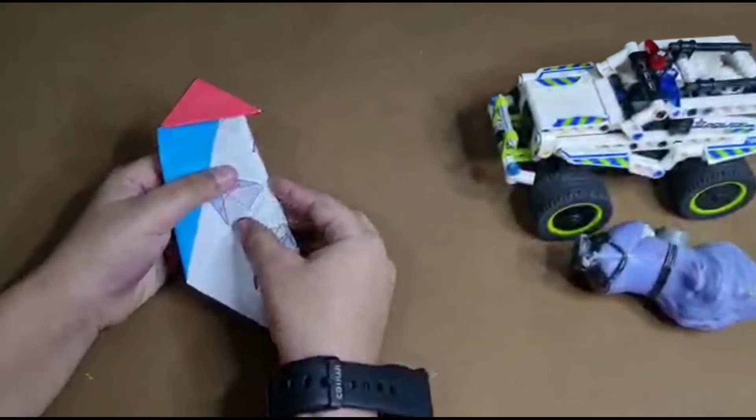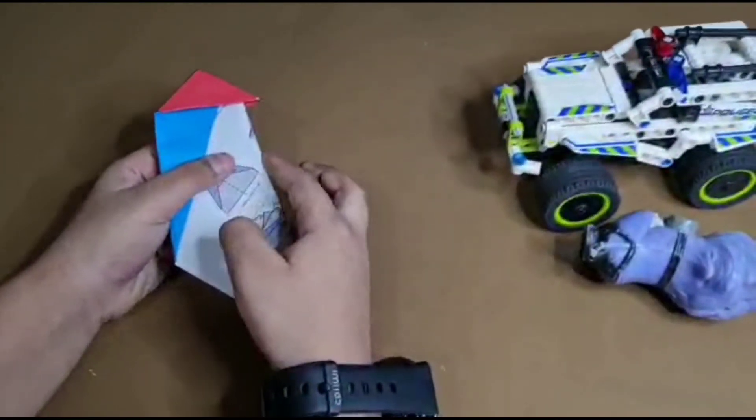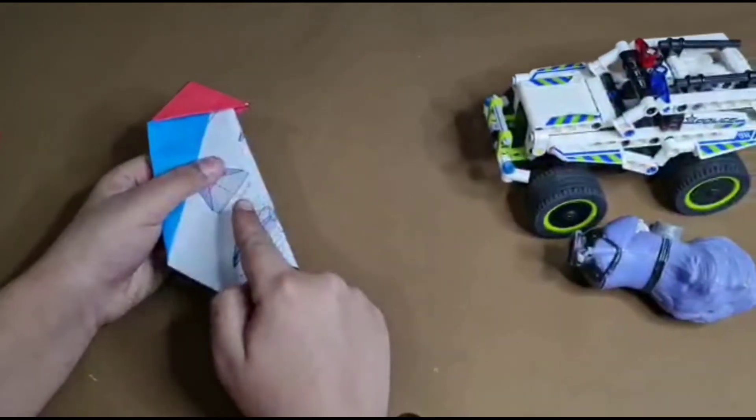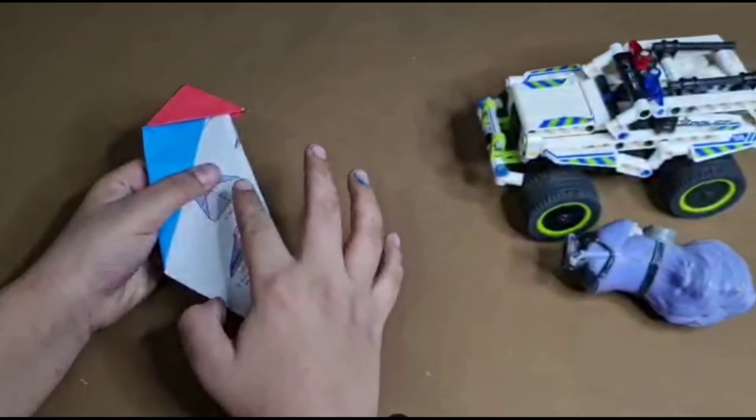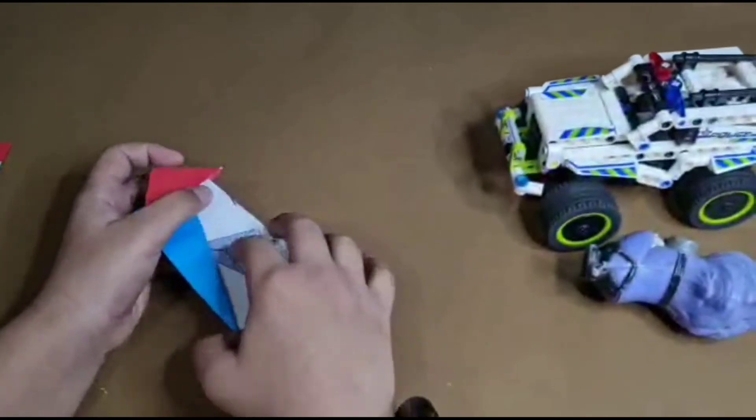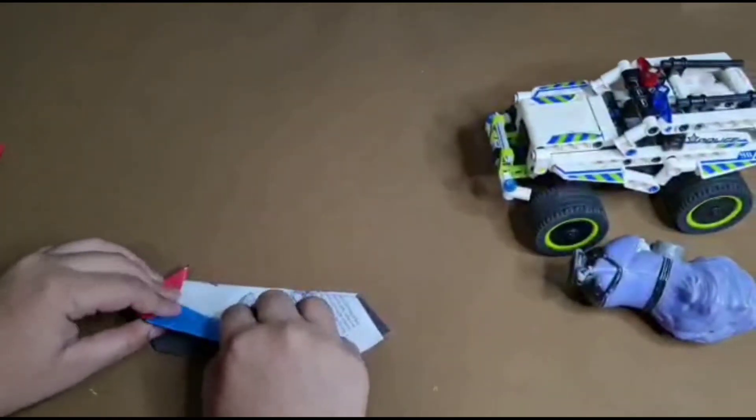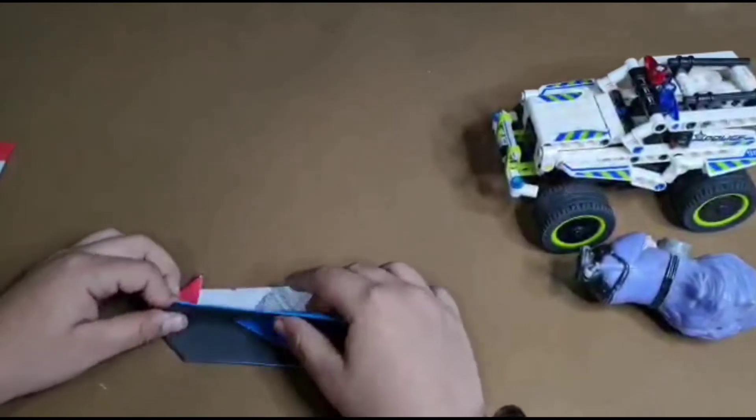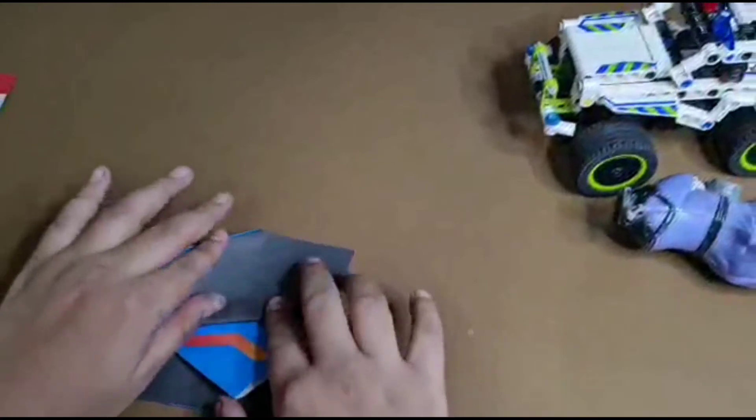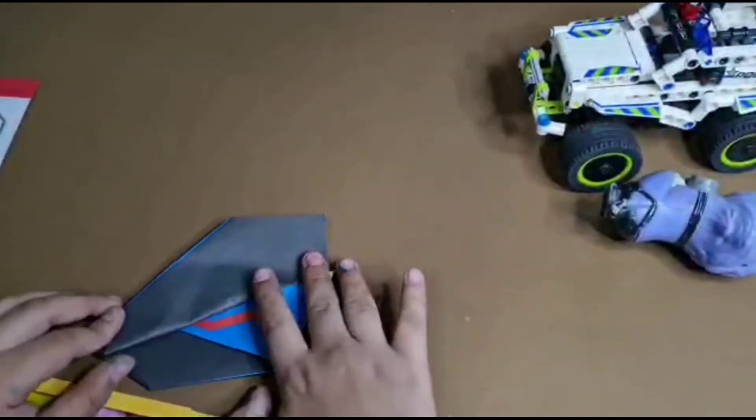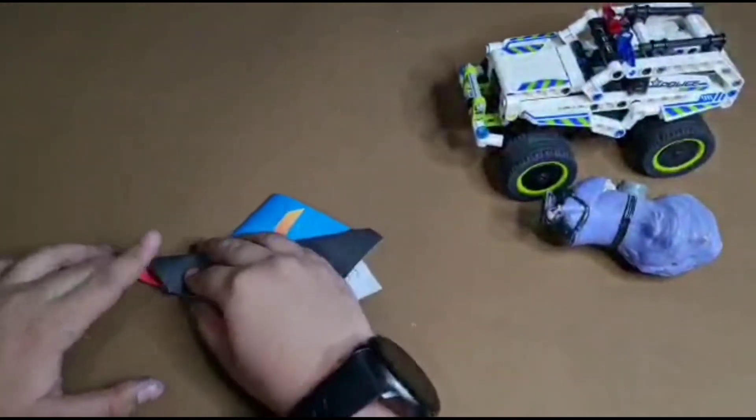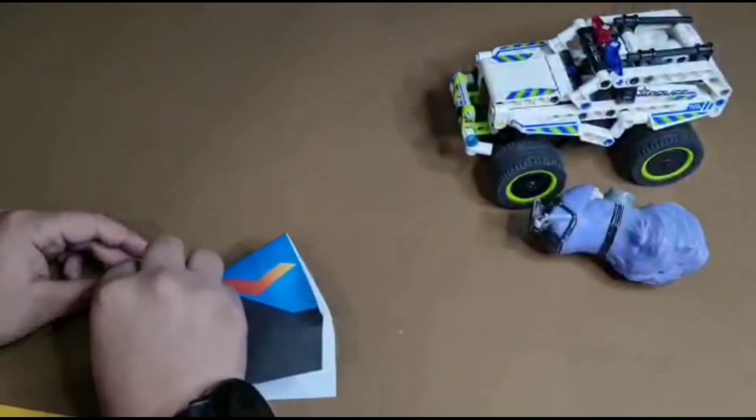Fold the flap down to the left. Fold the flap at the lower right angle, then fold it in half to the right folded edge. Fold the flap in half.